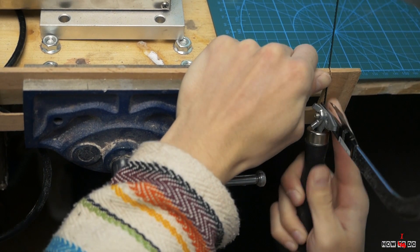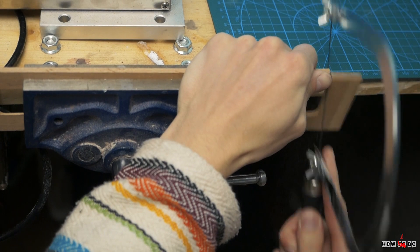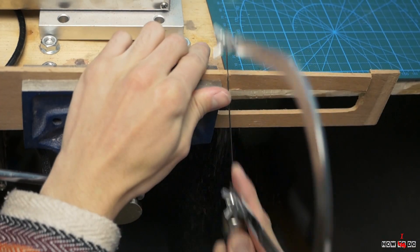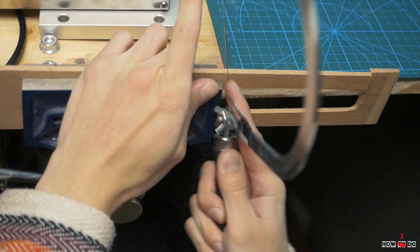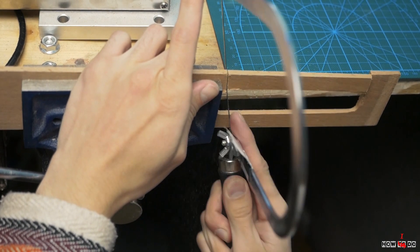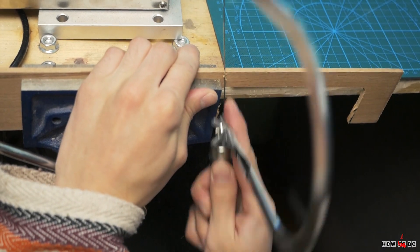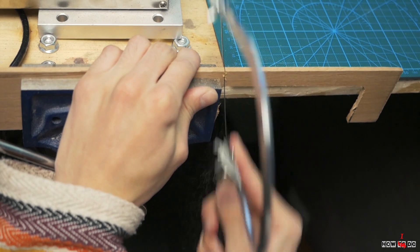Insulation tape instead of a handle is of course a great option, but today I want to do everything in beauty. Especially since I have some half inch scrap wood oak, which are perfect in size. I cut them.